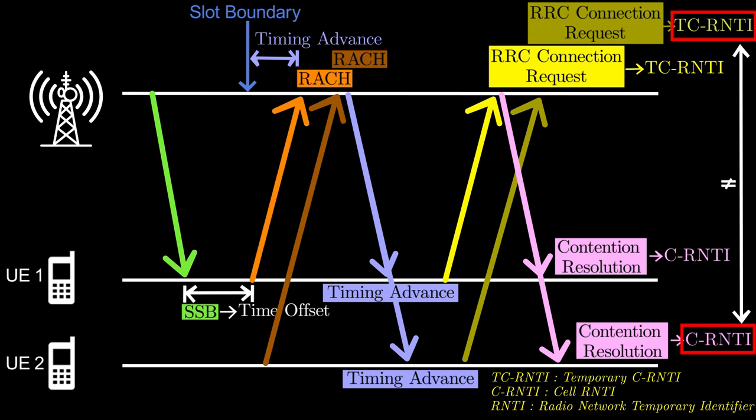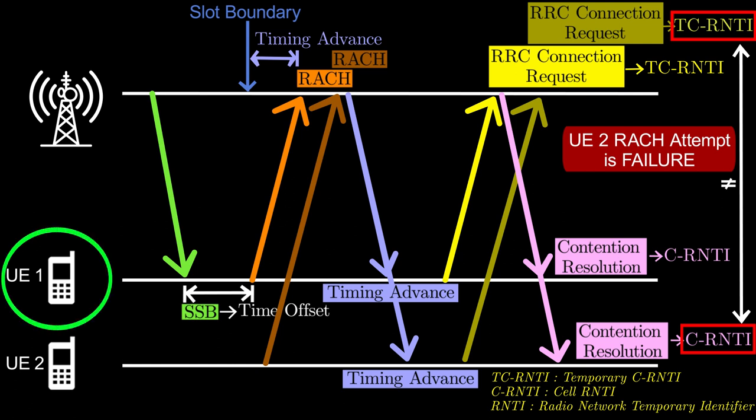So, UE2 concludes that its RACH attempt is a failure. Therefore, it has to re-attempt RACH procedure at another time. In the meantime, UE1 is declared to be successfully connected to the base station.